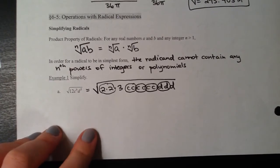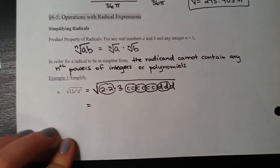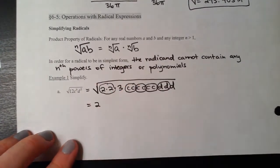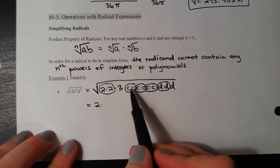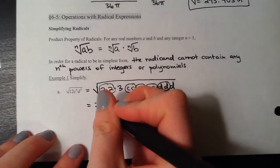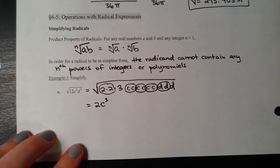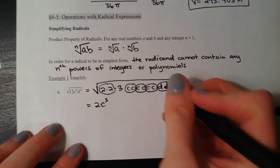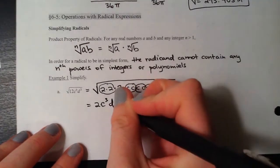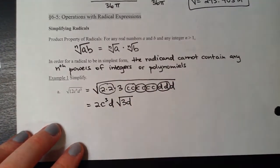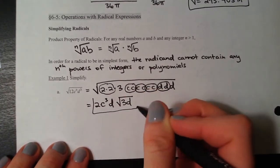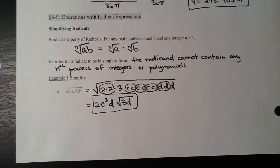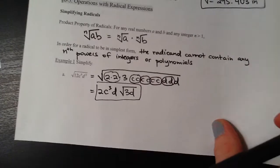When simplifying, we take the square root of each piece individually. The square root of two times two is two, so we bring that out. There are three pairs of c's, so we bring out c cubed. One pair of d's comes out as well. Then we write the leftovers underneath the radical sign - the three that didn't have a partner and the d that didn't have a partner. That's your final answer: bring out whatever is a perfect square and leave the rest under the radical.